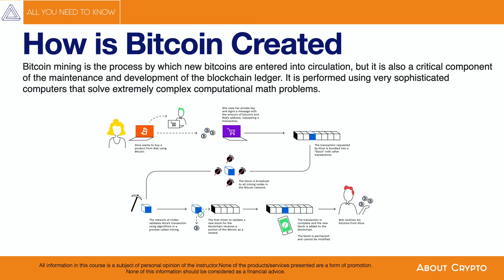It's as simple as that. Now, how mining works: let's say Alice wants to buy a product from Bob using Bitcoin. She uses her private key and signs a message with the amount of bitcoins and Bob's address, requesting the transaction. The transaction requested by Alice is bundled into a block with other transactions. The block is then broadcasted to all the mining nodes in the Bitcoin network.